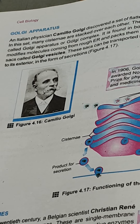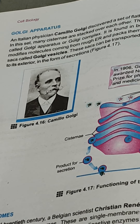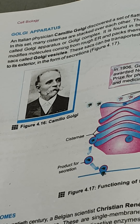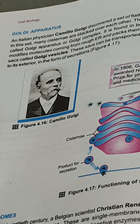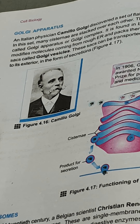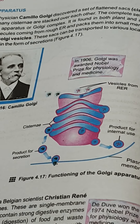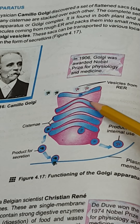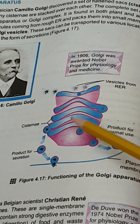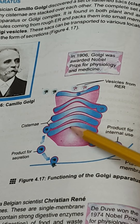The next organelle in the cell is the Golgi apparatus, also known as Golgi complex. The scientist Camillo Golgi first introduced these bodies, which is why they are known as Golgi bodies, Golgi complex, or Golgi apparatus. These are tubes and channels stacked upon each other, present in both plant and animal cells, and are also known as packaging bodies.